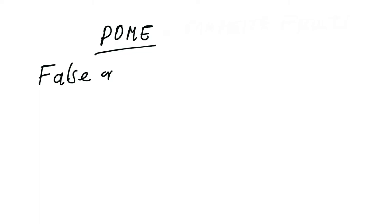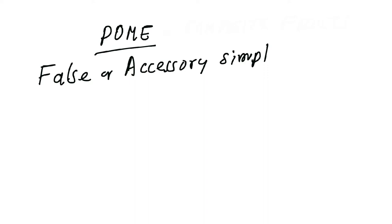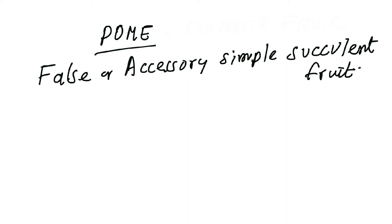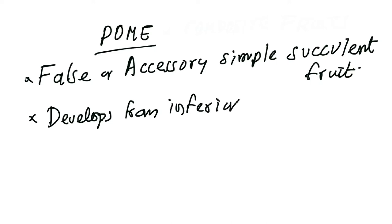Welcome students to the next video dealing with fruits. Here we are looking at a case called the pome, which is a division of the succulent fruits discussed in the previous video. A pome is a false or accessory simple succulent fruit. Accessory means that in addition to the ovary, other floral parts are also involved in the development of the fruit.